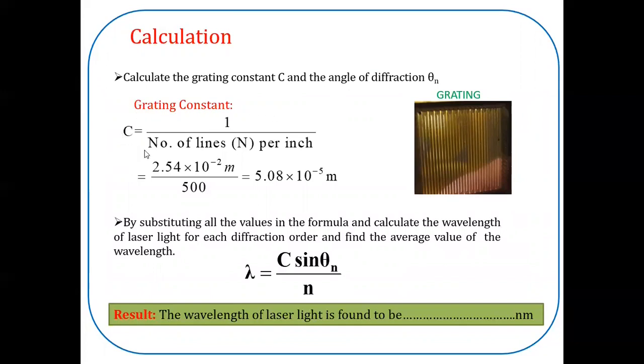It can be calculated once we know the number of lines drawn per inch. By using this formula, c is equal to 1 by number of lines per inch. 1 inch distance will be equal to 2.54 into 10 power minus 2 meter, divided by the number of lines drawn, 500. So this gives the grating constant value 5.08 into 10 power minus 5 meter.